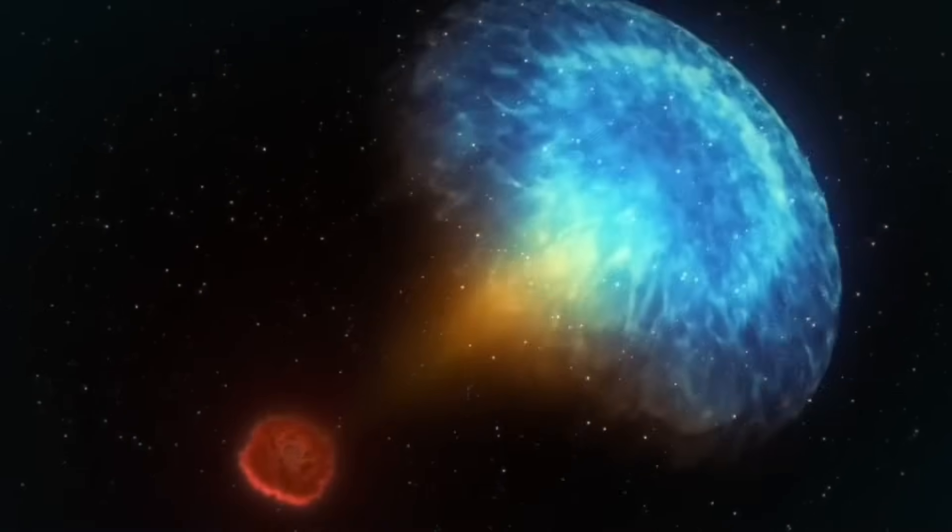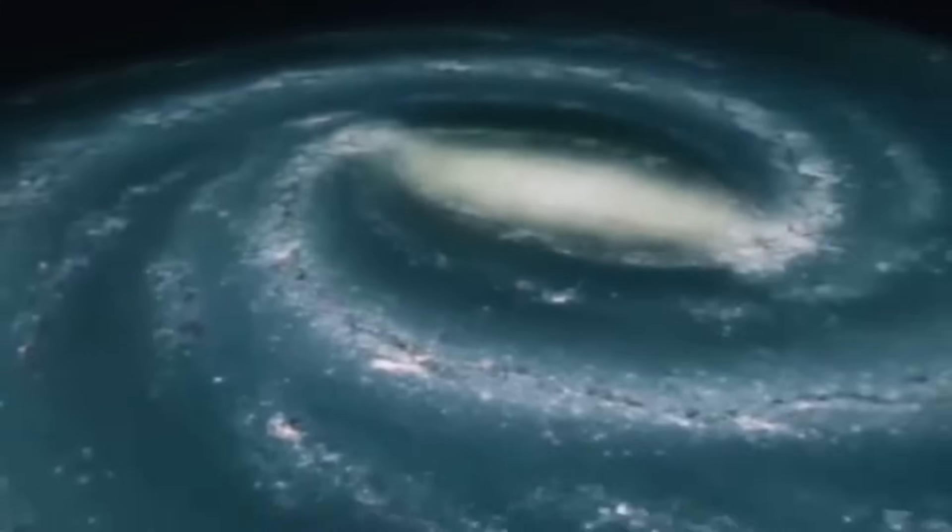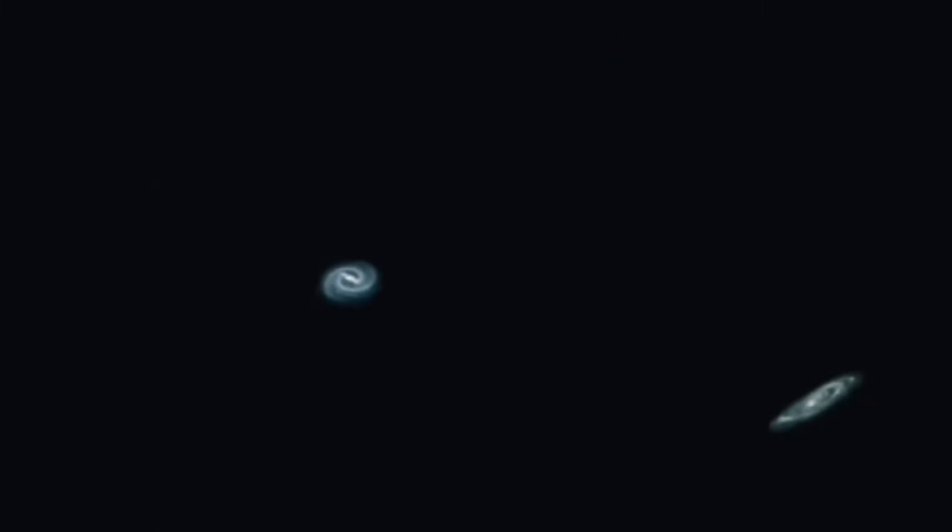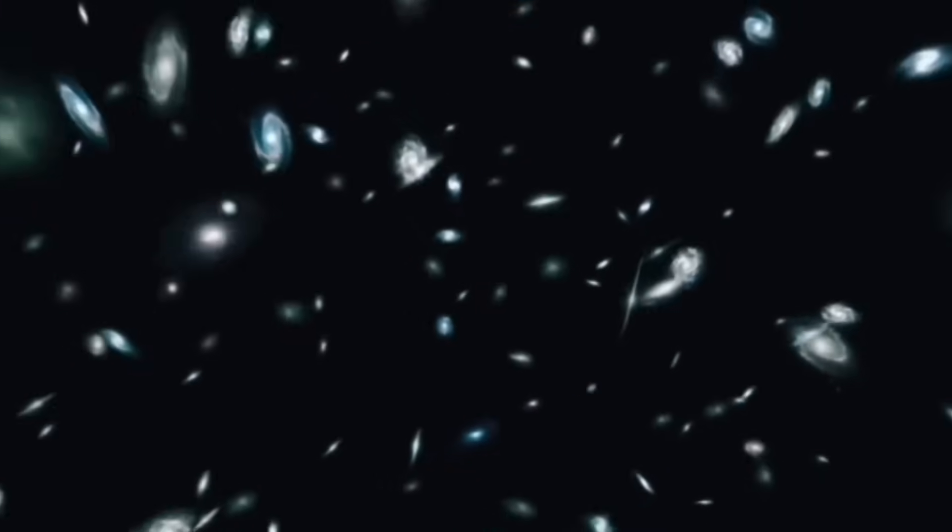And from that image patterns emerged. Rings of entropy. Layers of information folding in on themselves. Fractal geometries. Recursive echoes. Structured chaos that eerily resembled the architecture of thought itself.